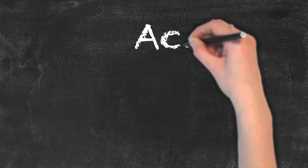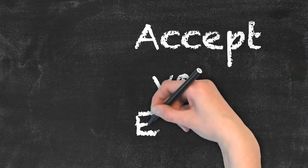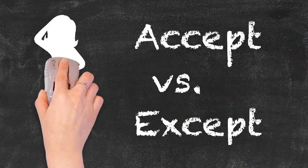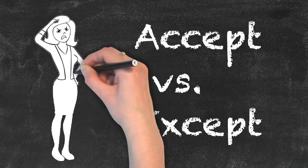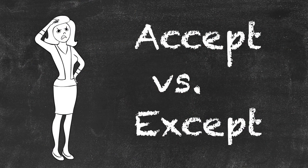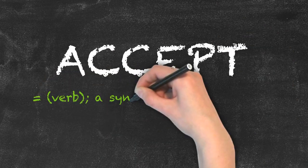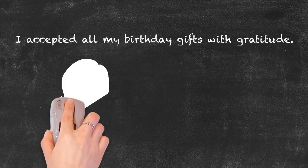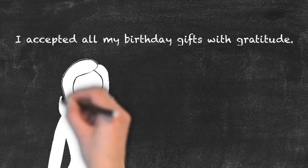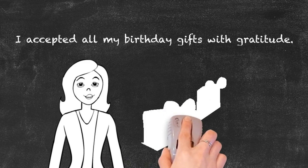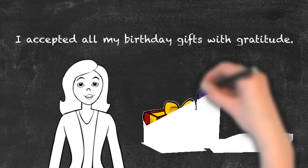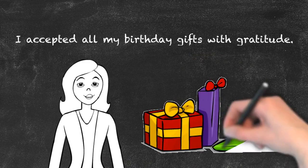Accept vs. Except — this is another set of words that are commonly confused in English. Let's take a closer look. Accept is a verb and is a synonym for 'to receive,' such as here: I accepted all my birthday gifts with gratitude.